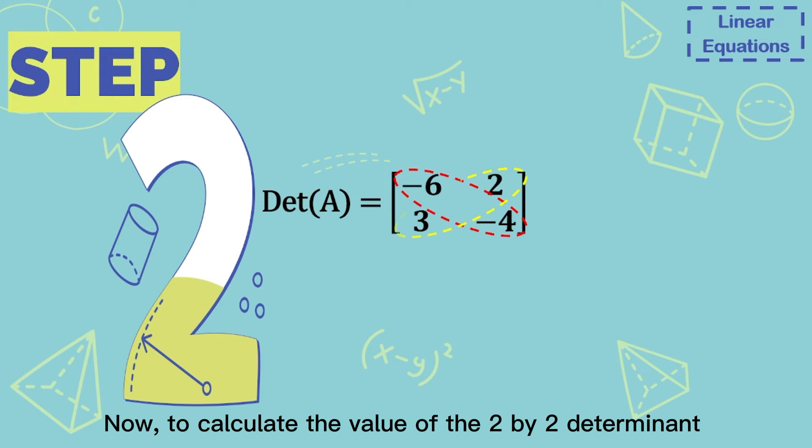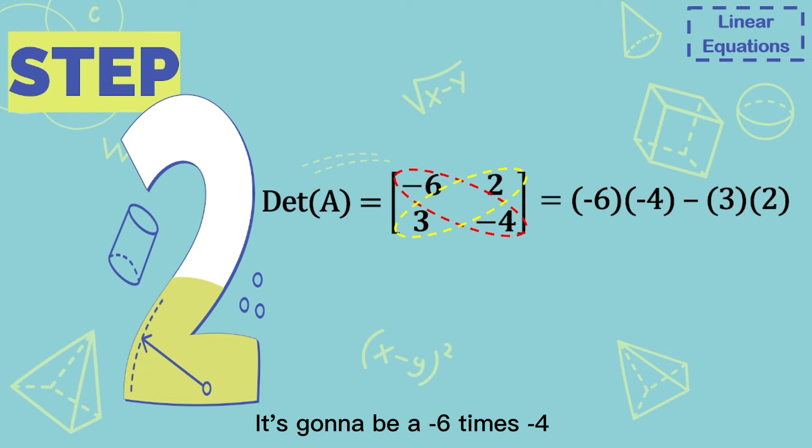To calculate the value of the 2x2 determinant, it's going to be -6 times -4 minus 3 times 2. -6 times -4 is 24, 3 times 2 is 6, and 24 minus 6 is 18.